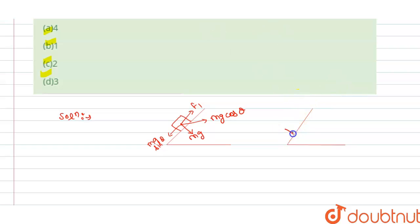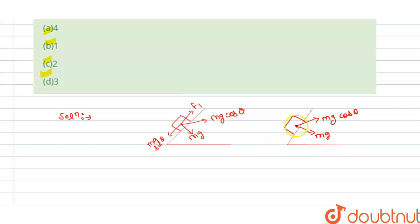Similarly, for diagram B, the body is here and mg acts downward. We resolve mg into components: mg cos θ in the perpendicular direction and mg sin θ along the incline. The force f2 acts up the incline to prevent sliding.